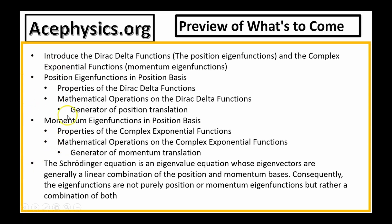At the end of the talk, I'll explain how the Schrödinger equation is an eigenvalue equation whose eigenvectors are generally a linear combination of position and momentum basis functions. The eigenfunctions of energy are not purely position or momentum eigenfunctions, but rather they're a combination of both.